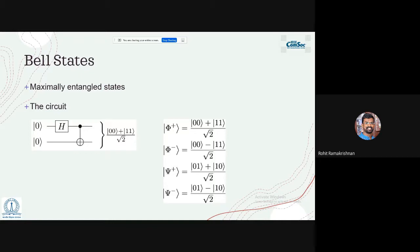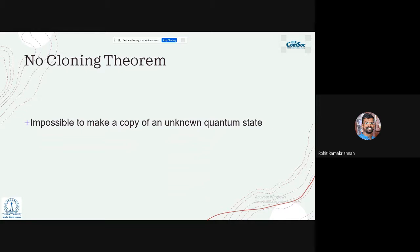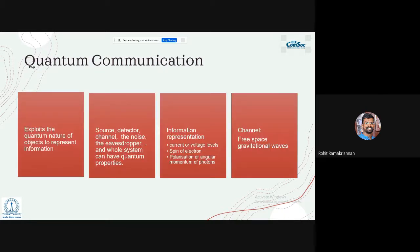Another concept required for quantum communication is the no-cloning theorem. Once you measure a quantum state it collapses into a classical state — the wave function collapses to either zero or one and you cannot go back. Without measuring a qubit you cannot make a copy of it. It is physically impossible to copy an unknown quantum state.